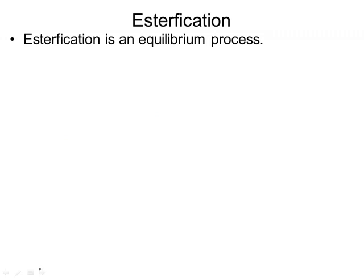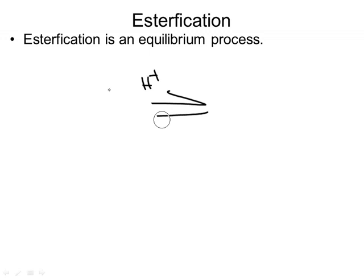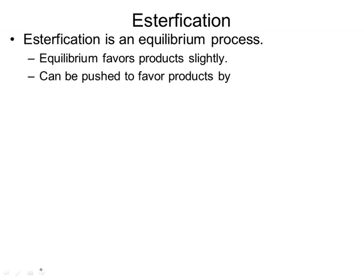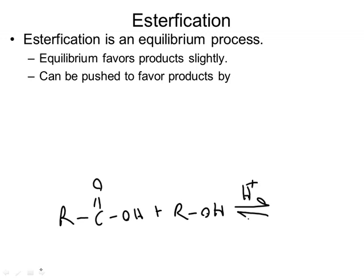Important things to know about esterification: it's an equilibrium process — that's why we have the double arrows with H+. It favors the products only slightly, so it's not a really efficient reaction.